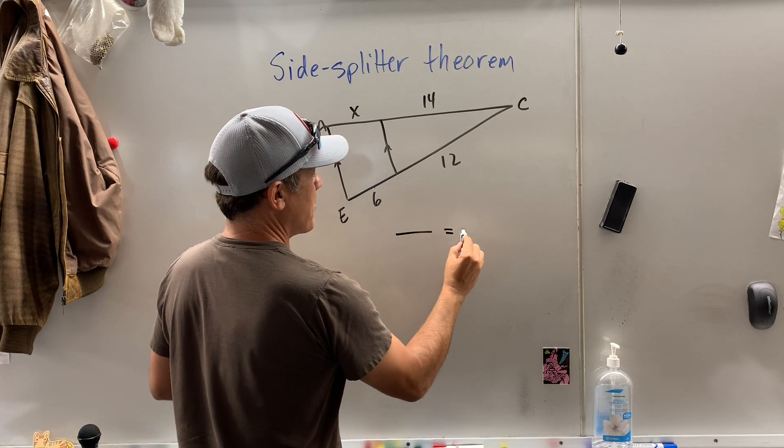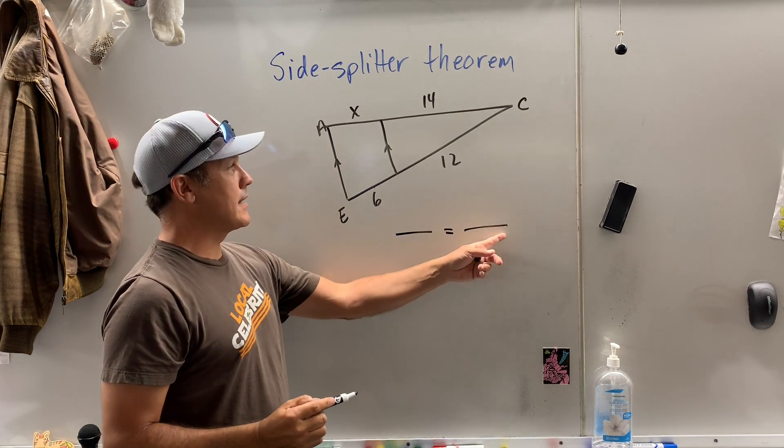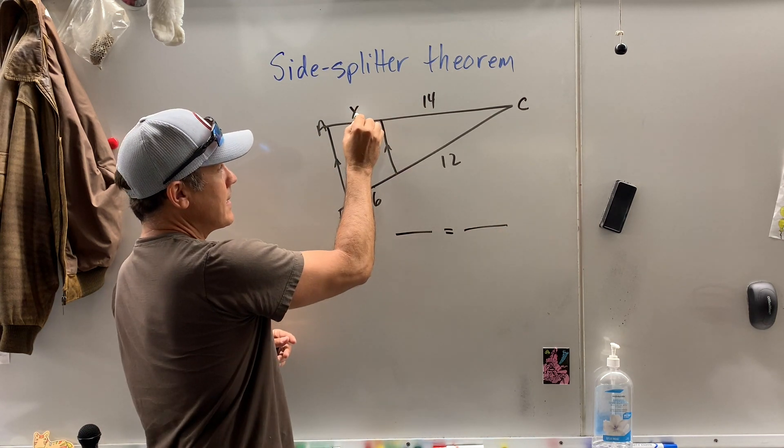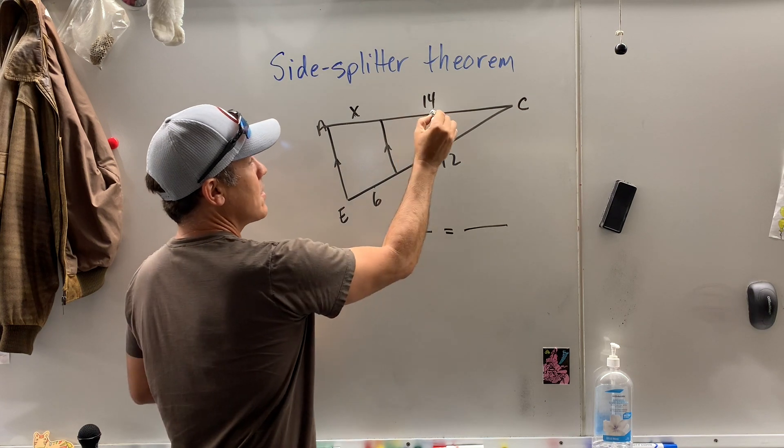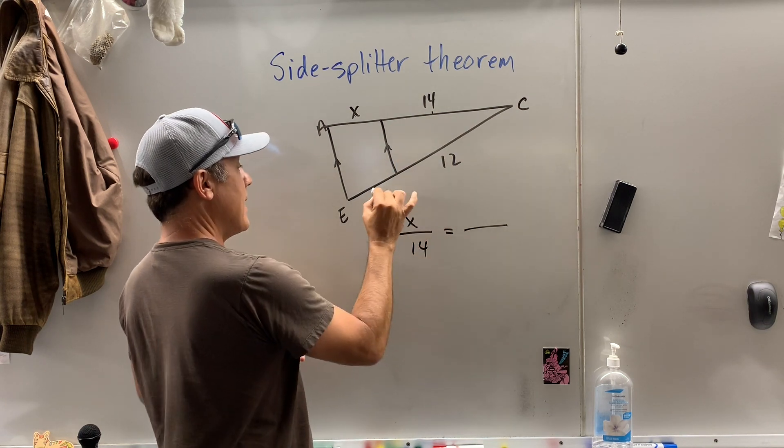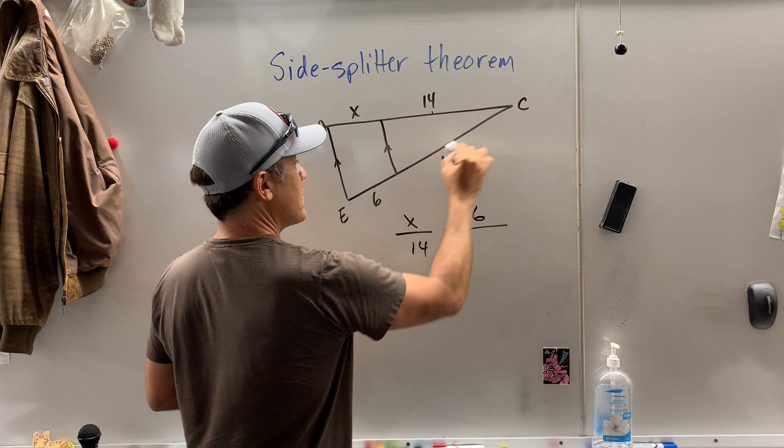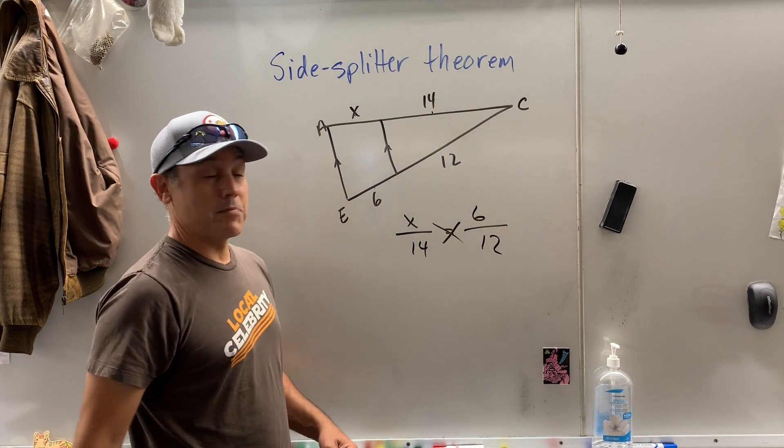Well, as soon as I think about proportion, I draw a line equals sign line. If I take x is to 14 as 6 is to 12, then I can cross multiply.